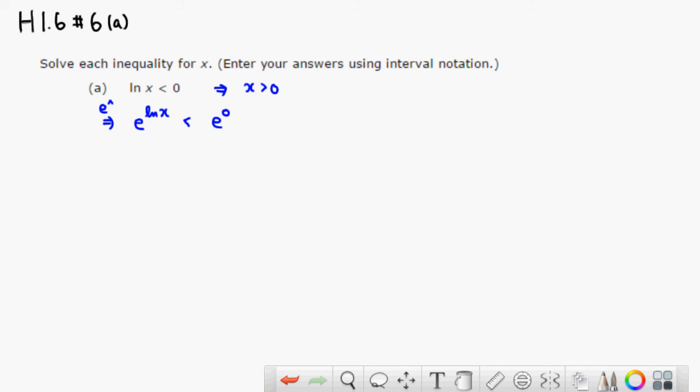This way we can cancel, and exponential function is an increasing function, so the inequality doesn't change. So e and the natural log cancel out. You end up getting just x is less than e to the 0 is 1.